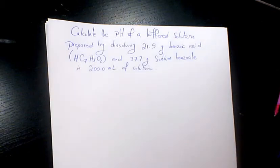What's up guys, this is Massey. Welcome to another video. In this video I want to show you how to find out the pH of a buffered solution prepared by dissolving 21.5 grams benzoic acid HC7H5O2 and 37.7 grams of sodium benzoate in 200 milliliters of solution.